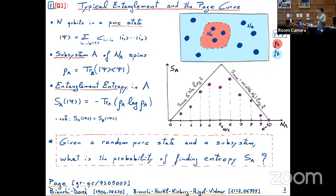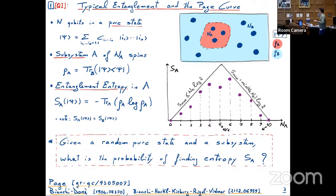Let me go back to this idea from 1993 by Don Page. If you take a Hilbert space — for concreteness, a system of m qubits — and you take a random state, and you take a subsystem, for instance a subset of those qubits, and you compute the entanglement entropy as a function of the number of qubits in the subset, you can ask: if I take this state at random from my Hilbert space, what's the probability of finding some value of the entropy? Clearly the entropy has to be below the theoretical maximum, but what's the probability of having some specific value?